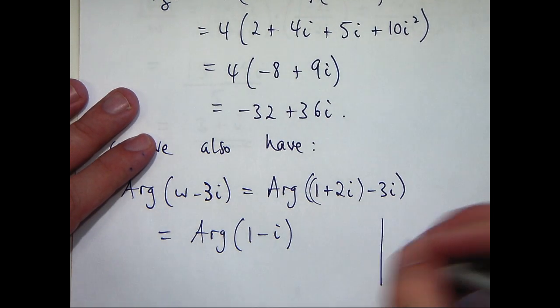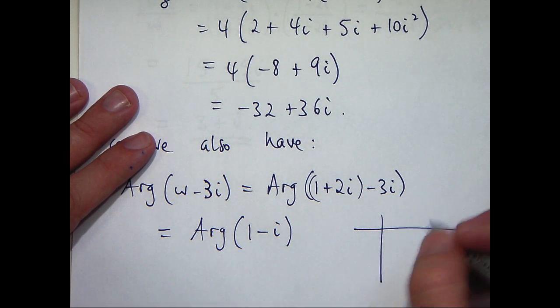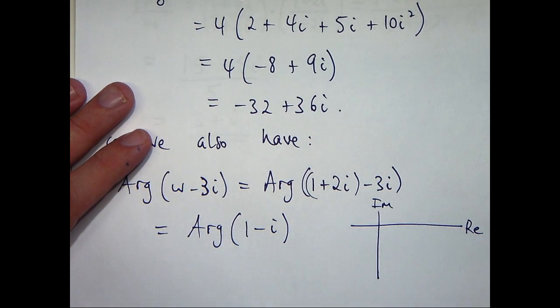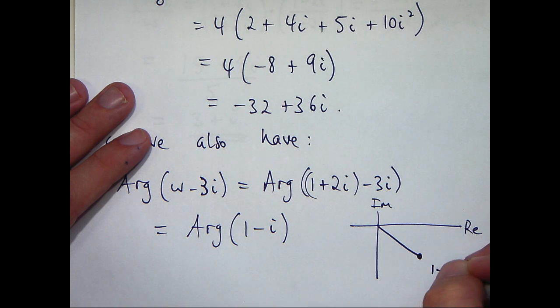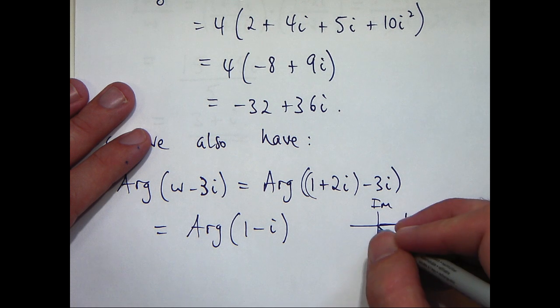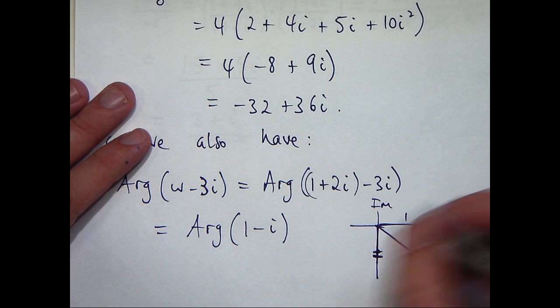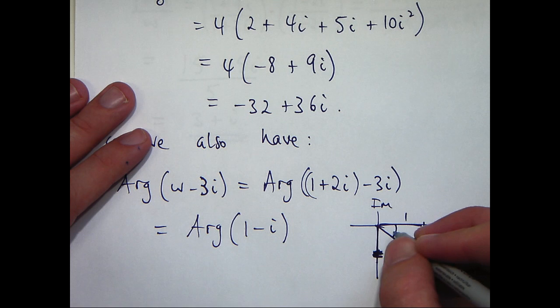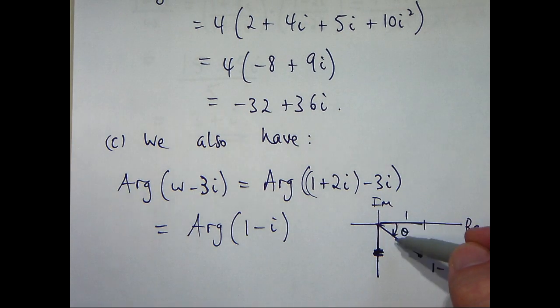So let's actually, you can do this a number of ways. I'm actually just going to draw this complex number 1 minus i in the complex plane. It's going to look something like this. So the length here is 1. The length here is 1. It's not very accurate.